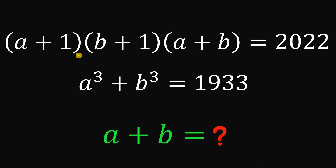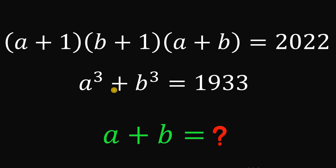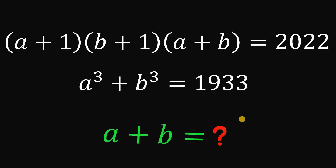Given these two equations: (a+1)(b+1)(a+b) = 2022 and a³ + b³ = 1933, the goal is to find the sum of a and b.